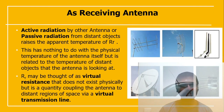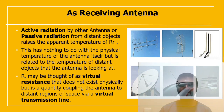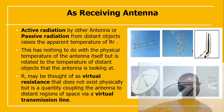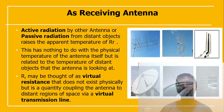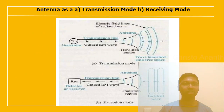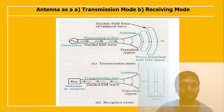As a receiving antenna, active radiation from other antennas or passive radiation from distant objects raises the apparent temperature of the radiation resistance. This has nothing to do with the physical temperature of the antenna itself, but is related to the temperature of the distant object the antenna is looking at. Radiation resistance, also called virtual resistance, does not exist physically but is a quantity coupling the antenna to the distant region of space through a virtual transmission line.